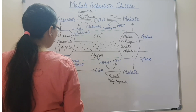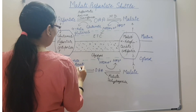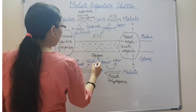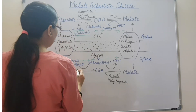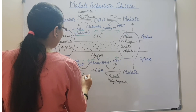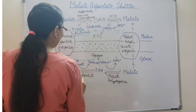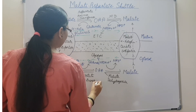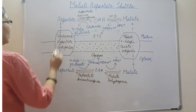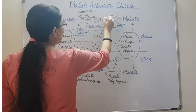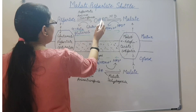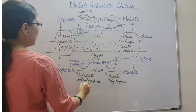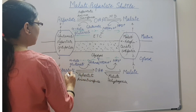Then this aspartate transfers its amino group to alpha-ketoglutarate. Alpha-ketoglutarate is converted into glutamate, and aspartate is converted into oxaloacetate. This is catalyzed by the cytosolic aspartate aminotransferase. In the mitochondrial matrix the concentration of oxaloacetate is more, so aspartate aminotransferase catalyzes the reaction from oxaloacetate to aspartate. And in the cytosol the concentration of aspartate is more, so this enzyme catalyzes the reaction from aspartate to oxaloacetate.